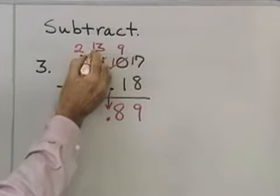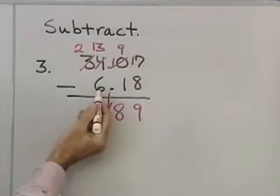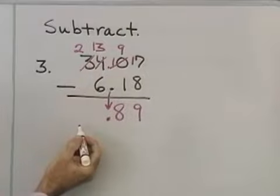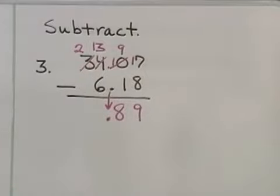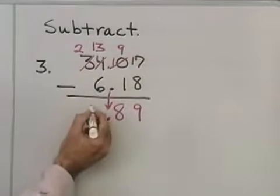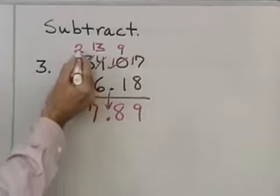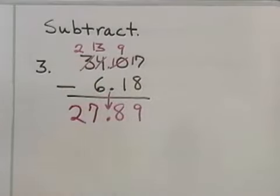And, the 10 I borrow, I'll write as 10 1s. So, that's 13. 6 from 13 is going to be 7. 6 from 13 is 7. And then, 0 from 2 will be left with 2.